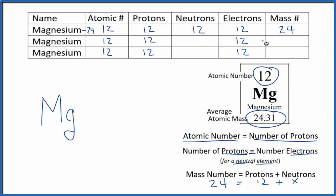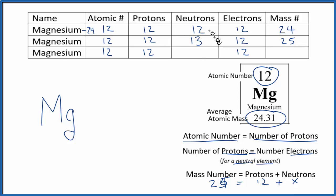The next isotope for magnesium has a mass number of 25. About 10% of the atoms in a sample of magnesium will have a mass number of 25. So 25 = 12 + x gives x = 13 — that's the number of neutrons. This is magnesium-25.